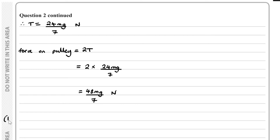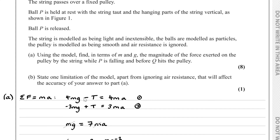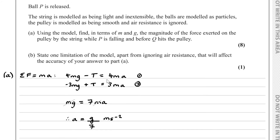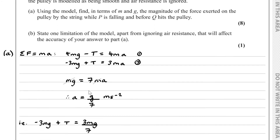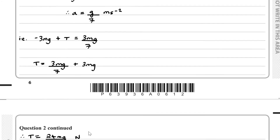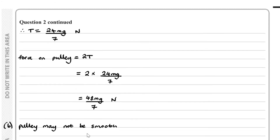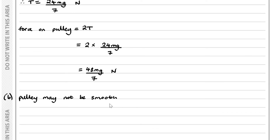For part B of question 2, we have to state one limitation of the model apart from ignoring air resistance that will affect the accuracy of the answer in part A. We could say, for example, the pulley may not be smooth.